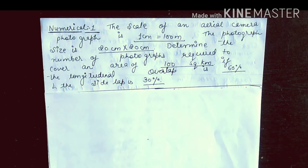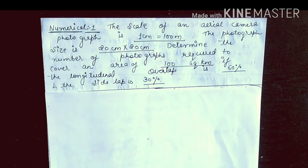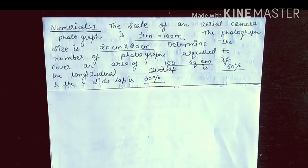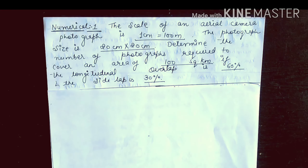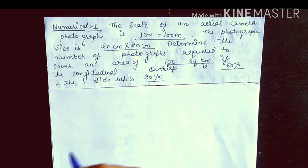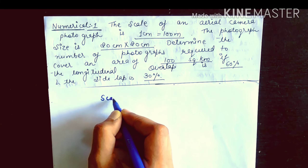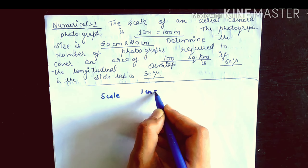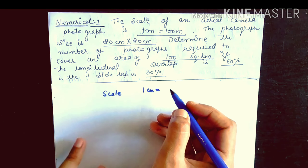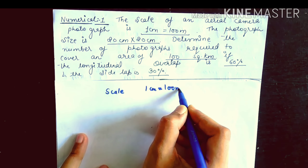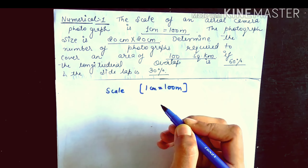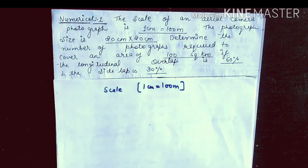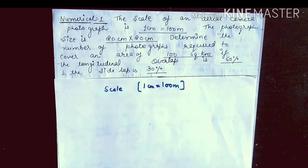Hello everyone. Now let us look at the numerical problems of flight planning. The first numerical: the scale of an aerial camera photograph is 1cm = 100m. This is the scale — it means 1cm on the photograph is equal to 100m on the ground.